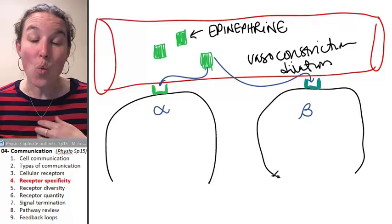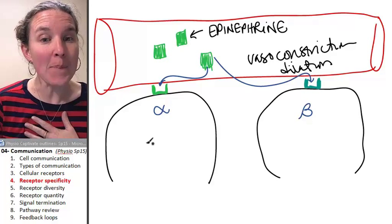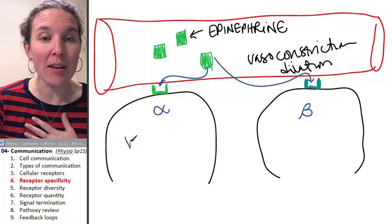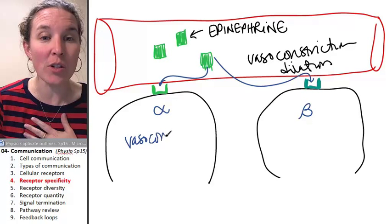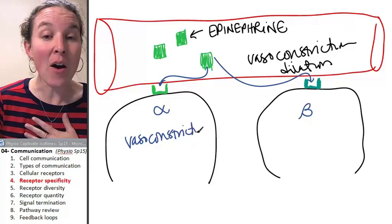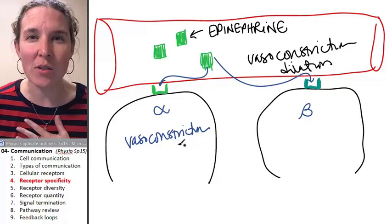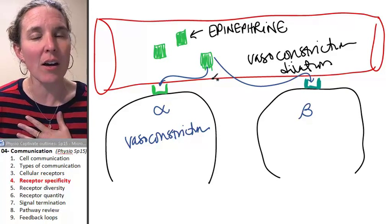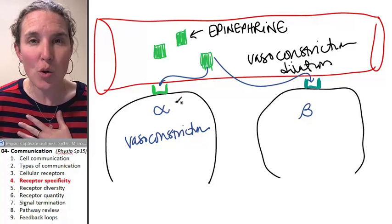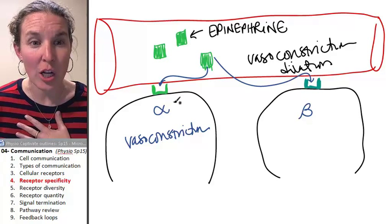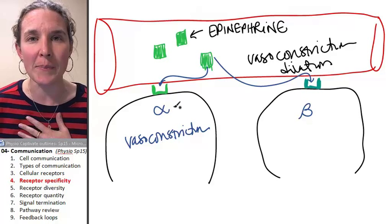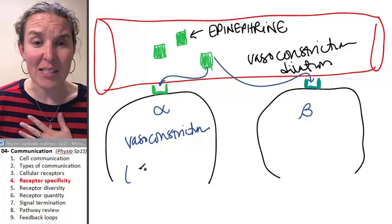And then we can think about, okay, here I'm going to cause vasoconstriction. Now I have given the message of vasoconstriction. Think about a place where, if you're having a sympathetic nervous response, you might want to have vasoconstriction. You might want to deliver less blood.